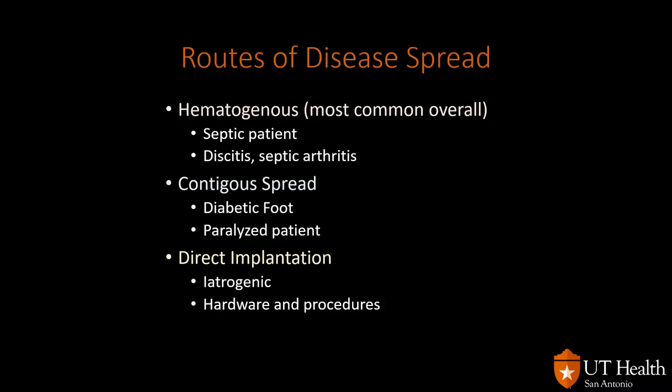Osteomyelitis is divided into two categories: routes of disease spread and progression. Progression will be acute, subacute, and chronic. The routes of disease include hematogenous — through the bloodstream — which is the most common, and is very common in septic patients with findings like septic emboli in the lung and perhaps multifocal osteomyelitis.